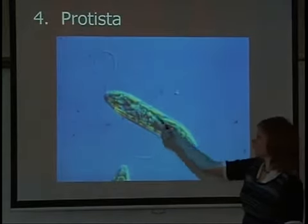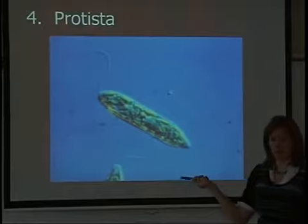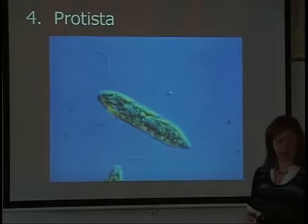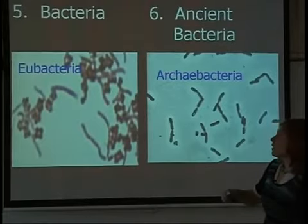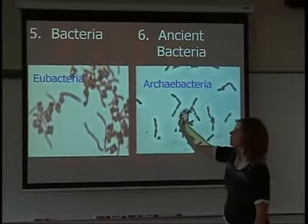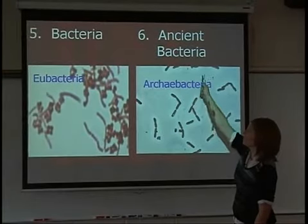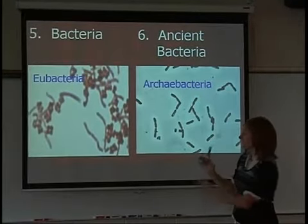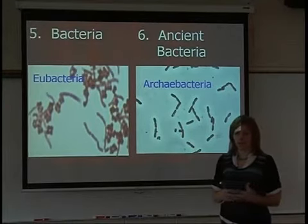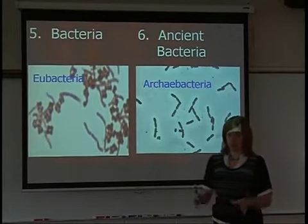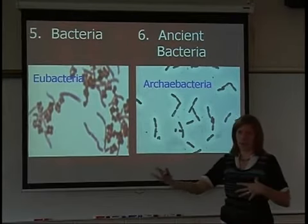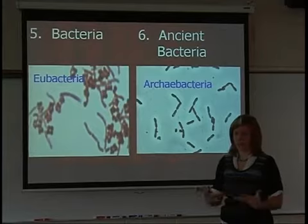Protista would be the next kingdom — mostly one-celled eukaryotic organisms, though there are exceptions. Then we have bacteria, called eubacteria. There's also a newer kingdom called archaebacteria, which is an ancient bacteria. These are very, very old and have evolved to live basically anywhere on the planet, from the hottest deepest parts of the ocean to hot springs.